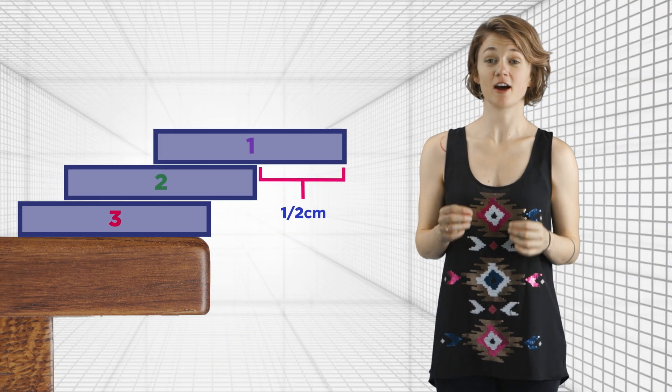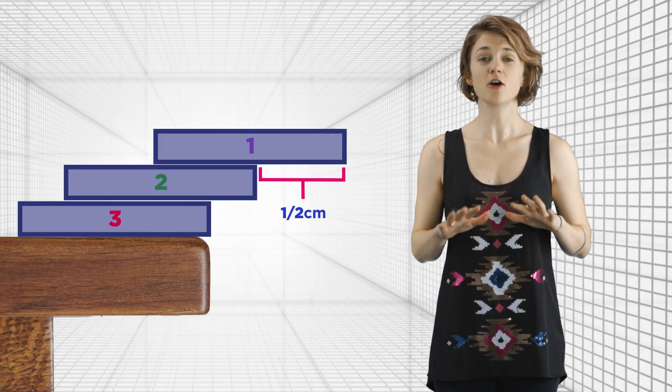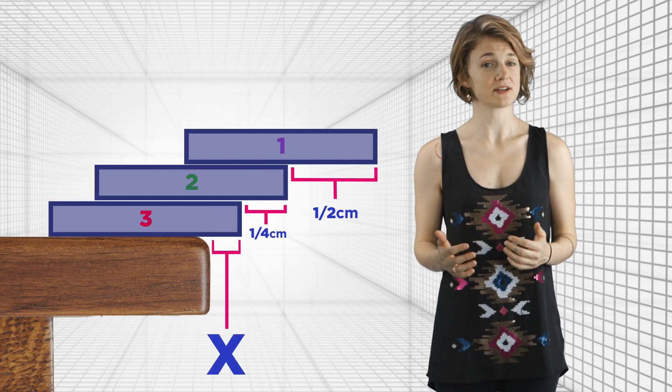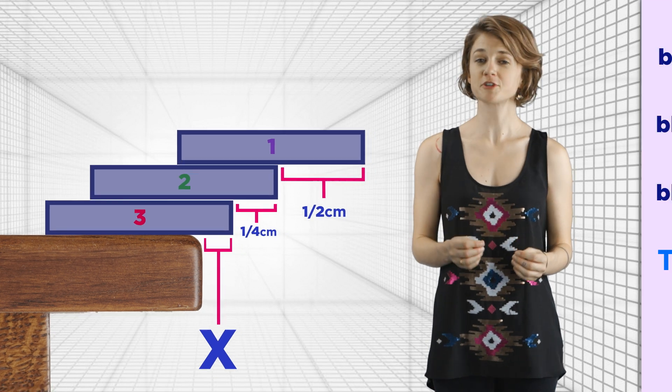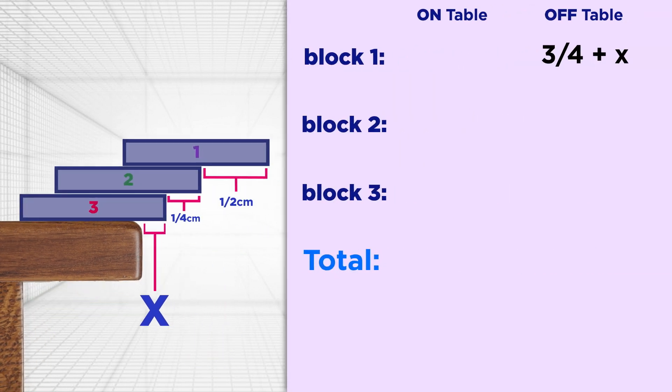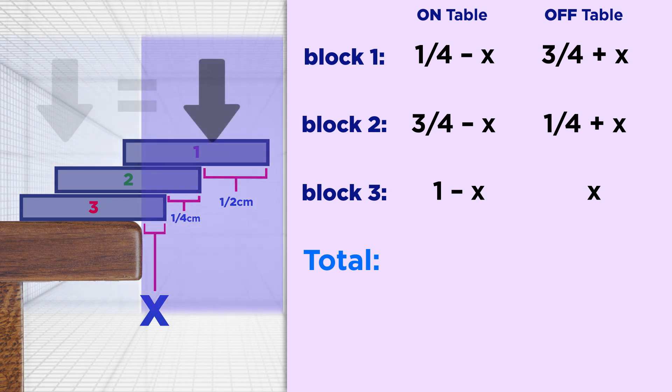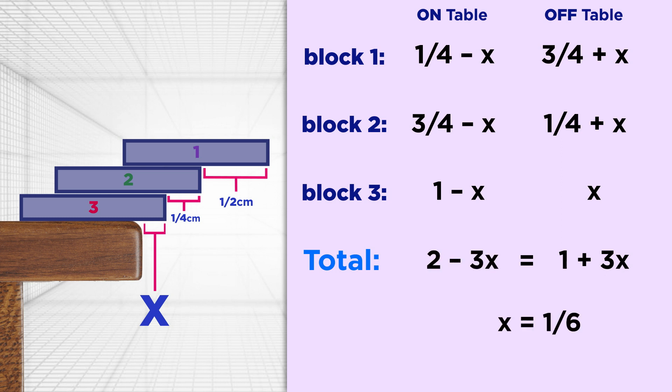Let's put a third block under, flush with the table. How far can you push this whole thing? Let the variable x represent the distance they'll move. The first block has mass 3⁄4 plus x off the table and 1¼ minus x on the table. The second is 1¼ plus x off and 3⁄4 minus x on. And the third has mass x off the table and 1 minus x on. In order for the center of mass to be directly over the edge of the table, the right column and left column must be equal. So, 1 plus 3x equals 2 minus 3x, which implies x equals 1 sixth.